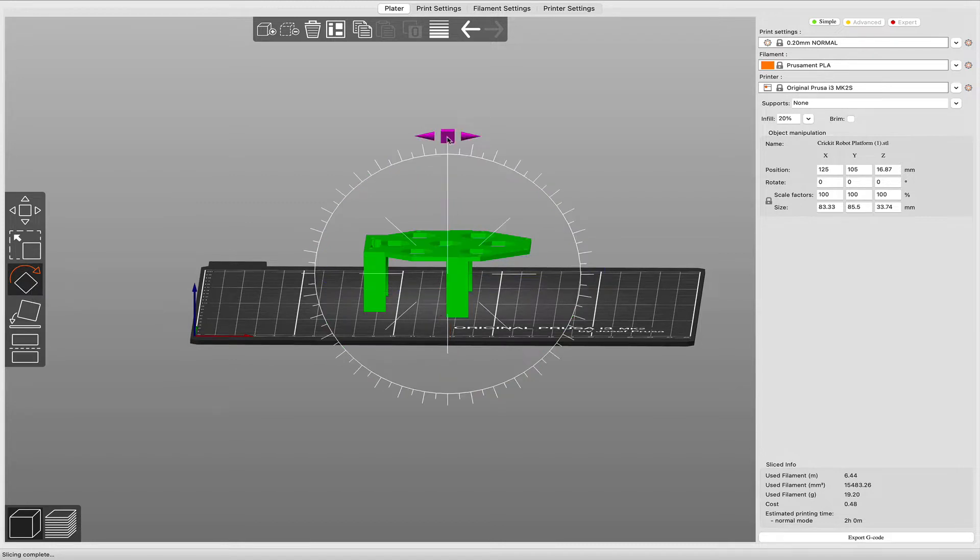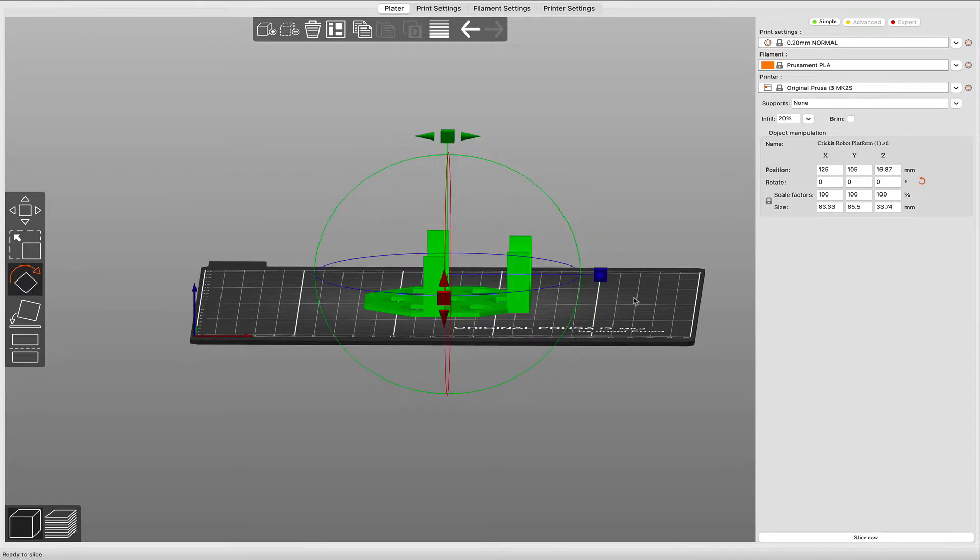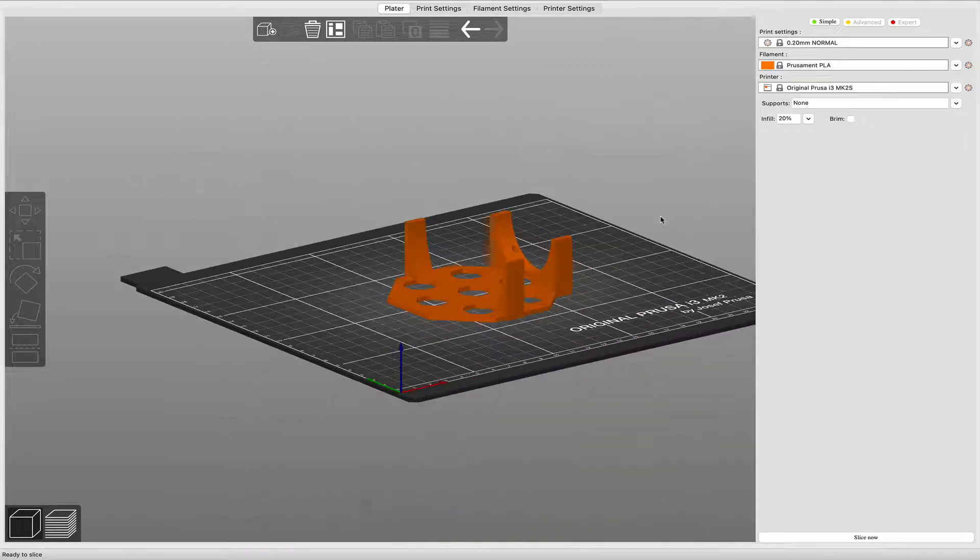Either way, you're going to want to flip the design upside down before printing it, either in Tinkercad or in your slicer.